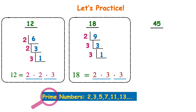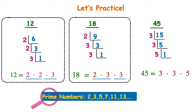Let's do 45. Start with the L. The smallest prime, 2, won't go into 45 since it's an odd number, so let's look at 3. Using the divisibility rule for 3: 4 plus 5 equals 9, and 3 goes into 9, so 3 goes into 45 — 3 times 15 gives me 45. Continue down the ladder. Does 3 go into 15? Yes — 3 times 5 is 15. Does 3 go into 5? No, but 5 does — 5 times 1 is 5. I've reached 1, so I'm done. The prime factorization of 45 is 3 times 3 times 5. Check: 3 times 3 is 9, and 9 times 5 is 45.